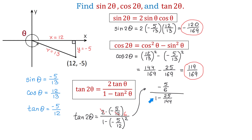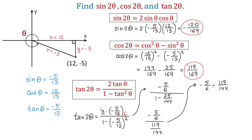If we write 1 as 144 over 144, then 144 minus 25 is 119. So now we have negative 5 over 6 divided by 119 over 144. We convert this division into multiplication by flipping the second fraction. Then 144 divided by 6 is 24, and negative 5 times 24 is negative 120, all over 119. So tangent of 2 theta equals negative 120 over 119.